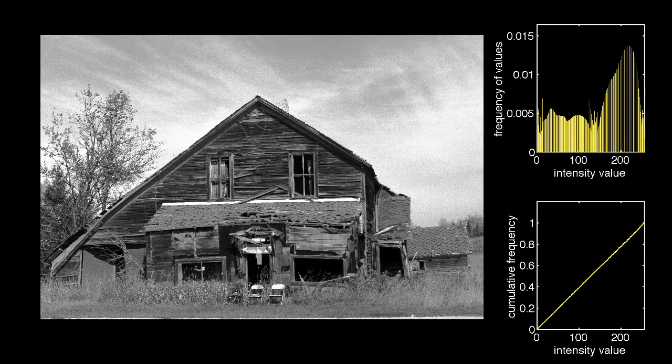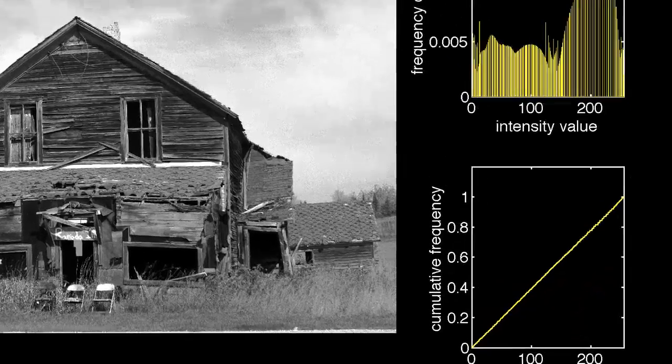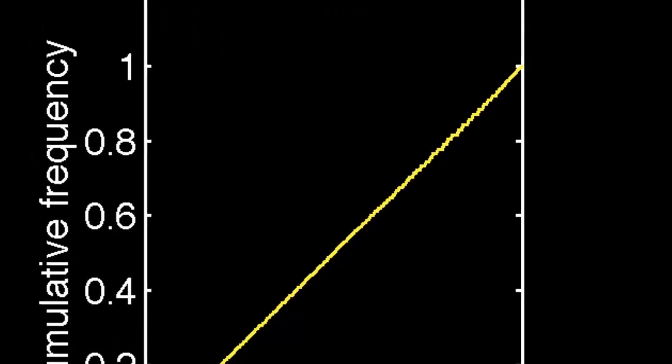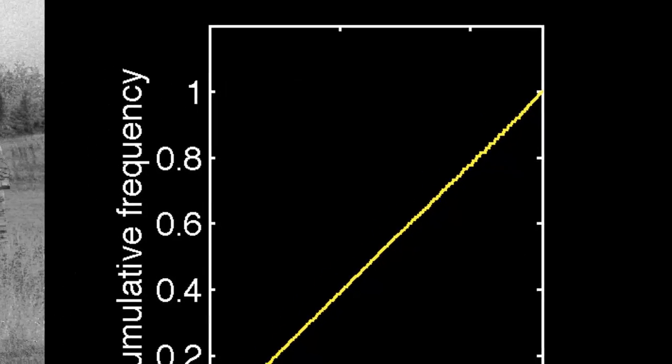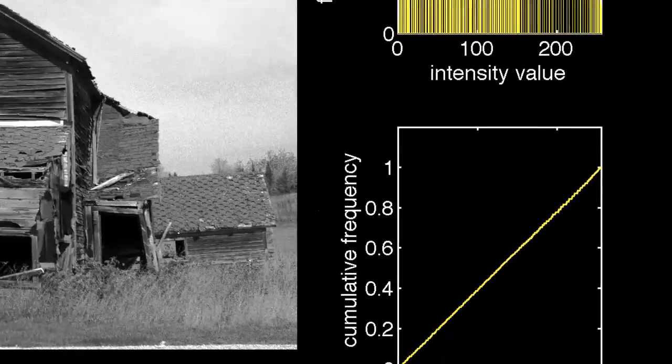Here's what happens after we apply the transformation. The frequency histogram has been spread out a bit and is more evenly distributed and the cumulative frequency plot looks very much like a straight line. It deviates a bit from a straight line with some minor jaggedness, but the way it resembles a straight line indicates that we've made the intensities much more evenly distributed from low to high values.